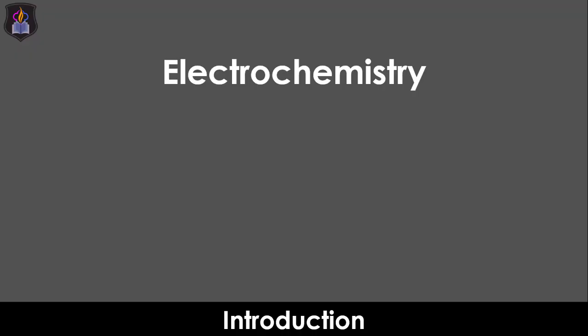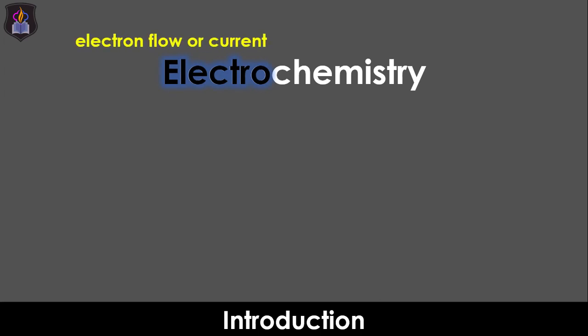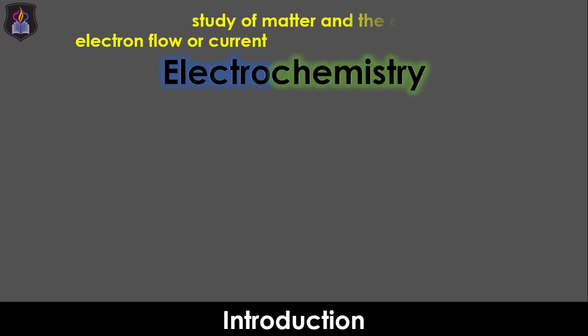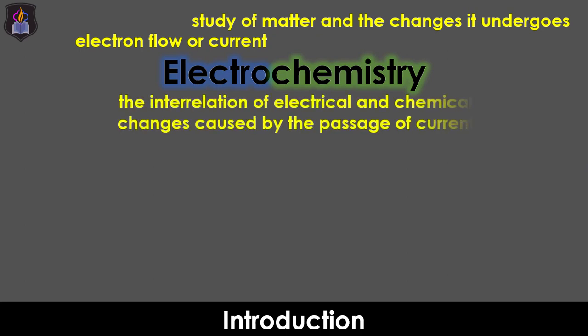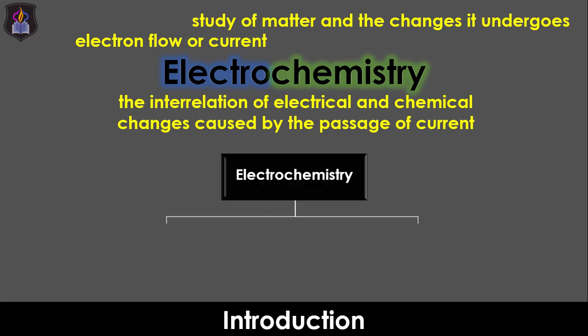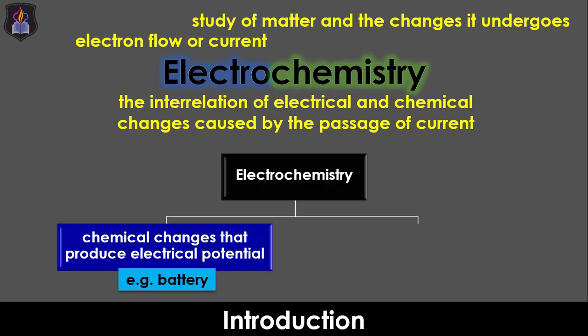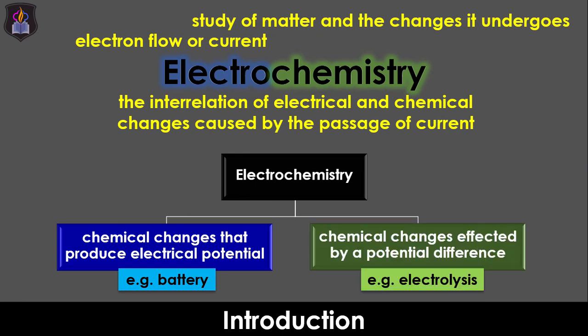Electrochemistry is obtained from two words: electro, meaning electron flow or current, and chemistry, which is the study of matter and the changes that matter undergoes. Therefore, electrochemistry is the field of chemistry that deals with the interrelation of electrical and chemical changes caused by the passage of current. It is divided into two areas, namely chemical changes that produce electricity like in a battery, and processes that use electricity to bring about chemical changes like electrolysis.